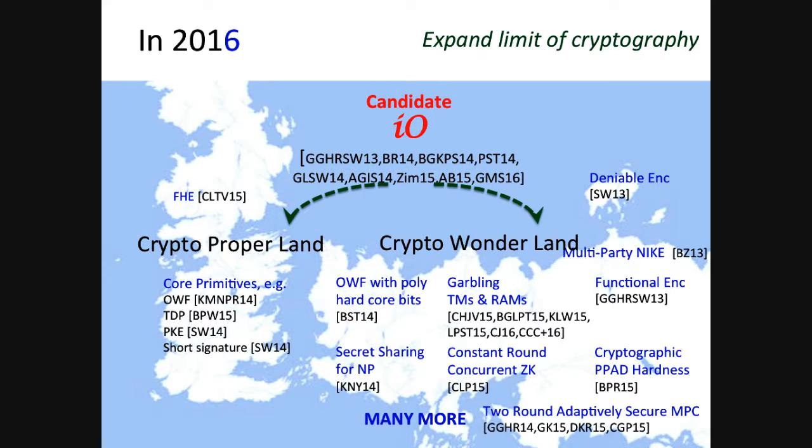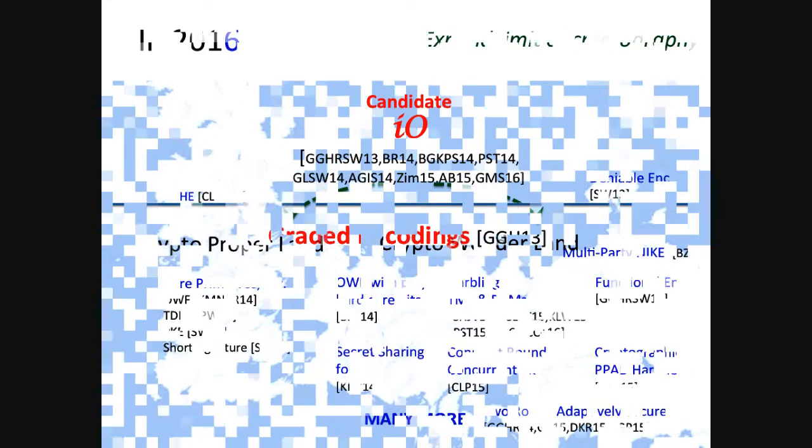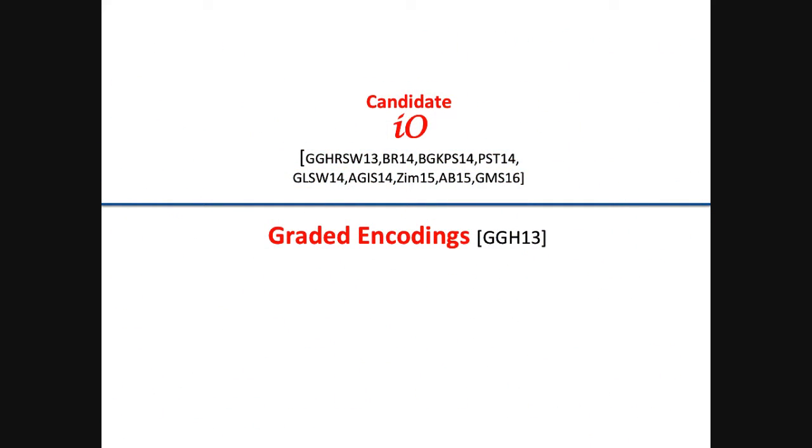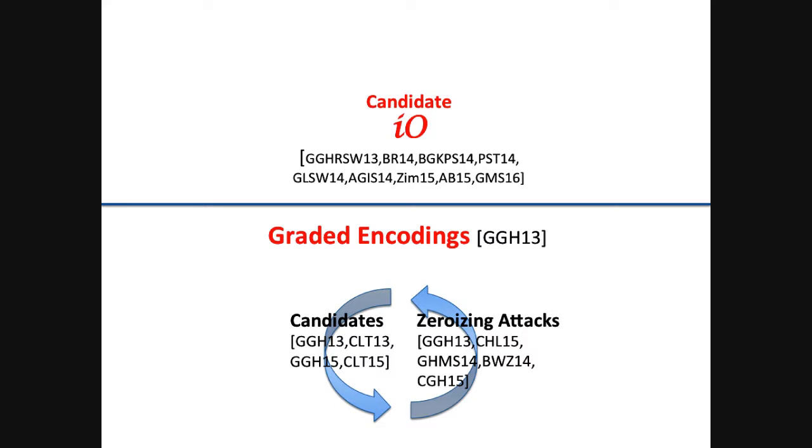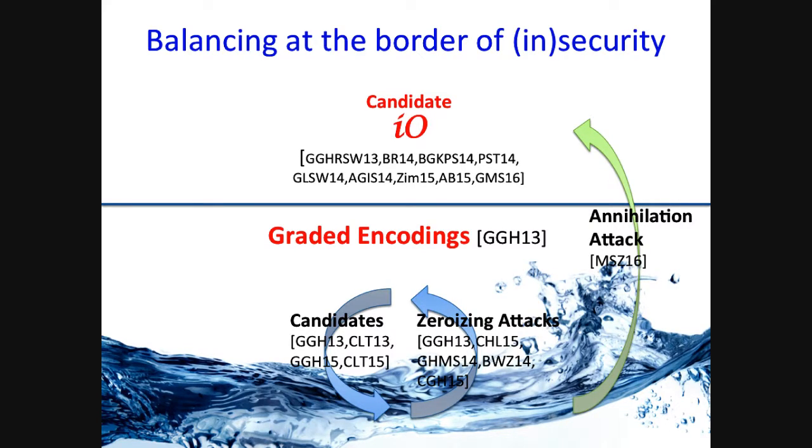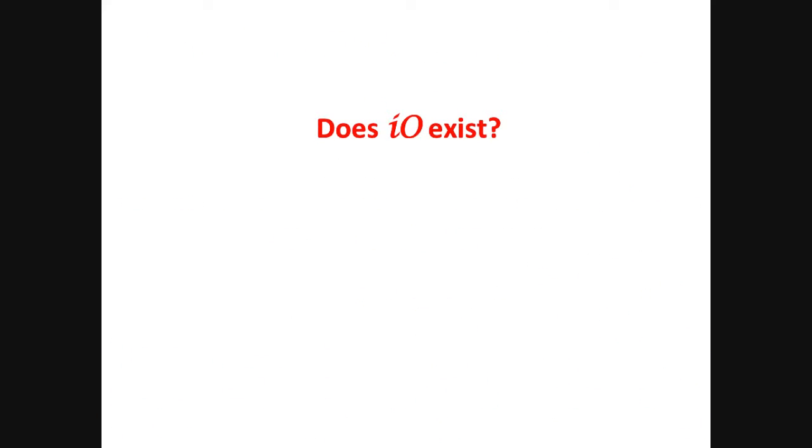Or does it actually? It turns out that all IO constructions today are only candidates, roughly meaning that we don't have high confidence in their security. And they're built upon this structure called graded encodings. And in the past three years, graded encodings have been going through this continual cycle of proposals of construction and attacks. And very recently, there's even an attack that directly attacked the very first IO construction by Garg et al. when instantiated with graded encodings. While most of the non-IO constructions are not directly broken, I think it is fair to summarize the state of the affair as being balancing at the border of security and insecurity. Therefore, today, does IO exist? The answer to this question is still uncertain.